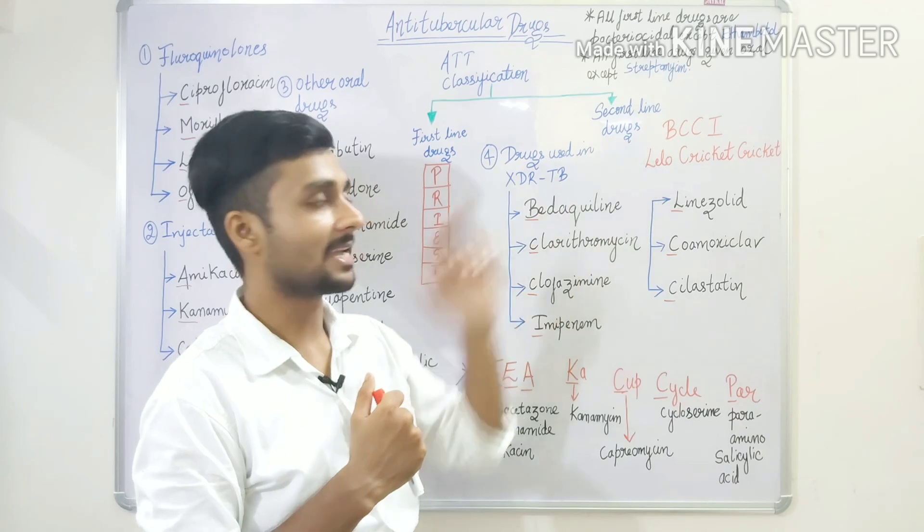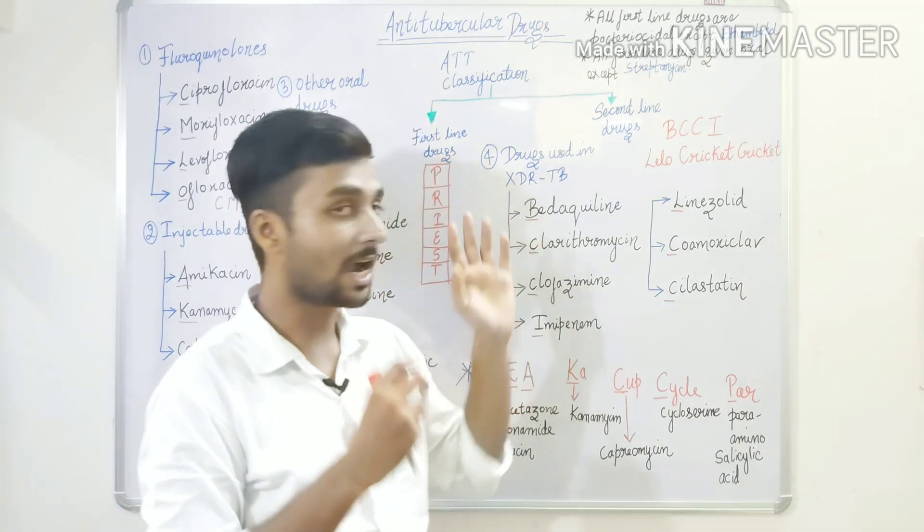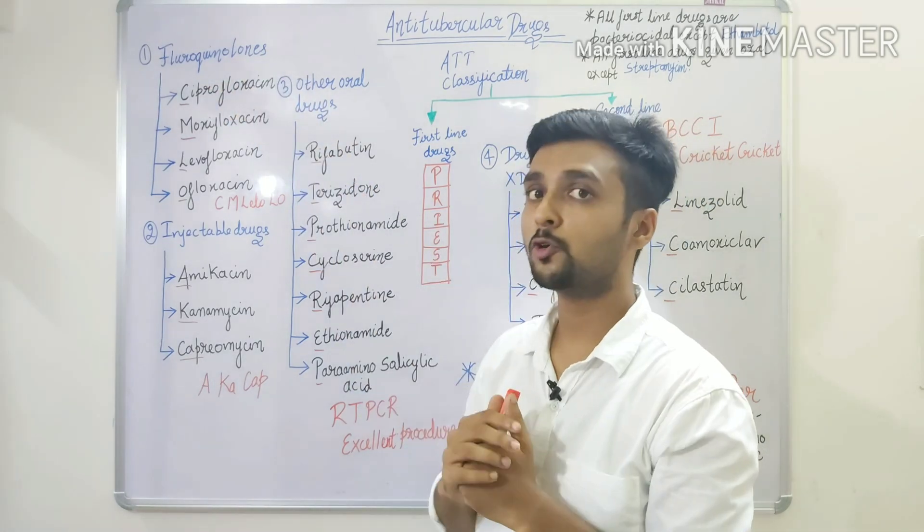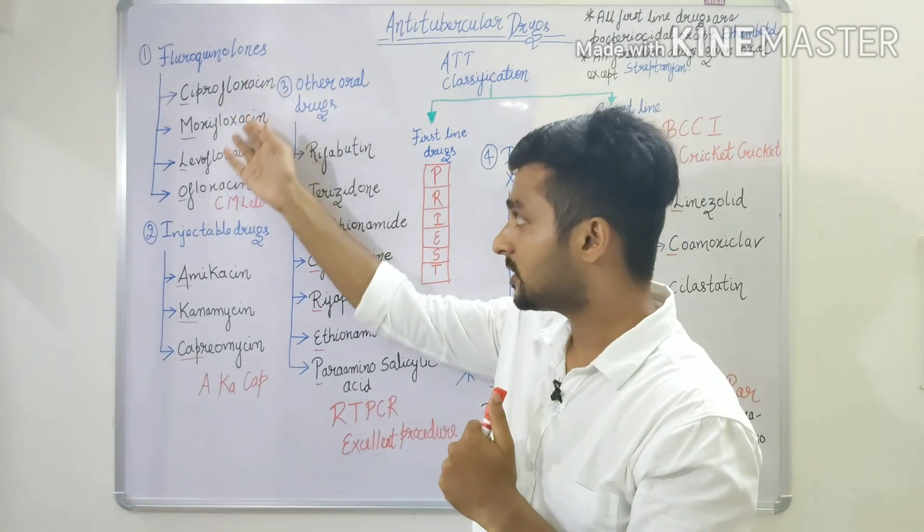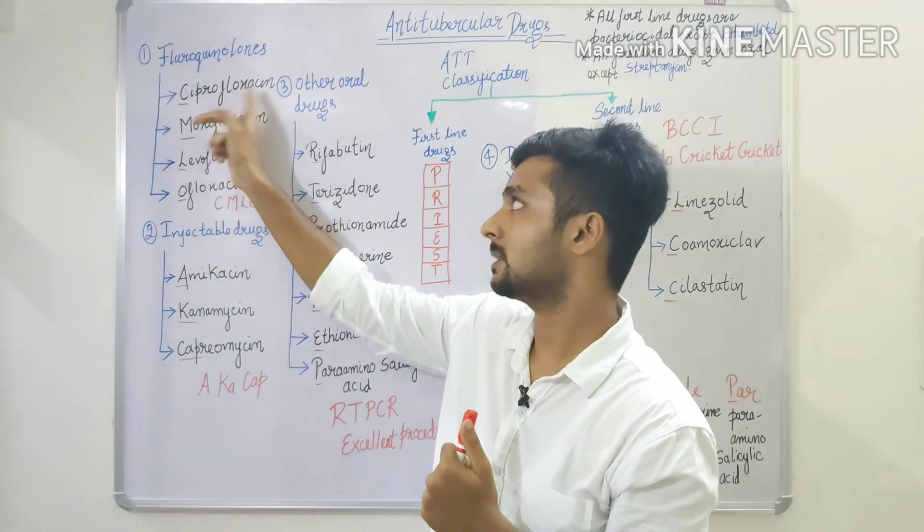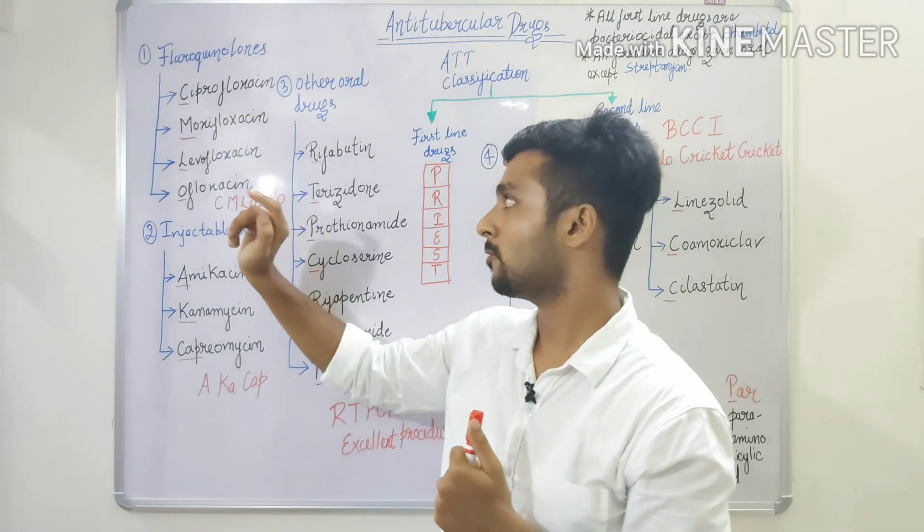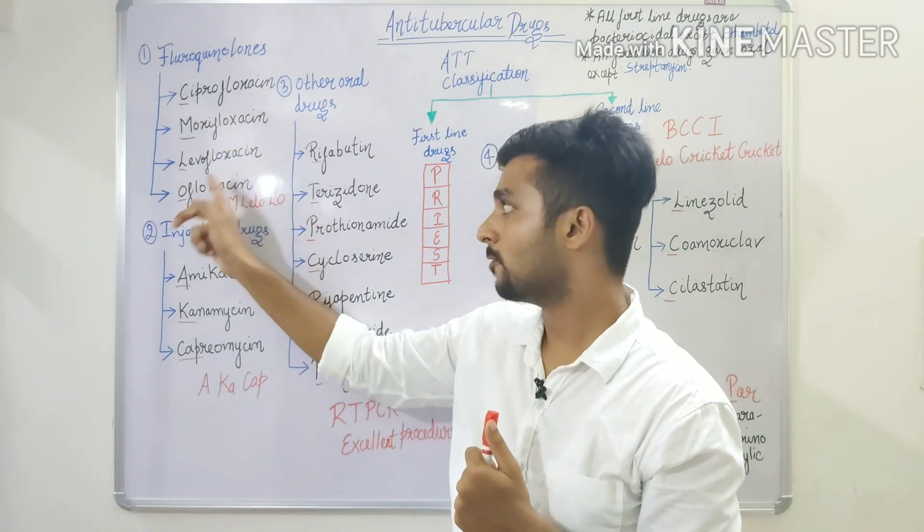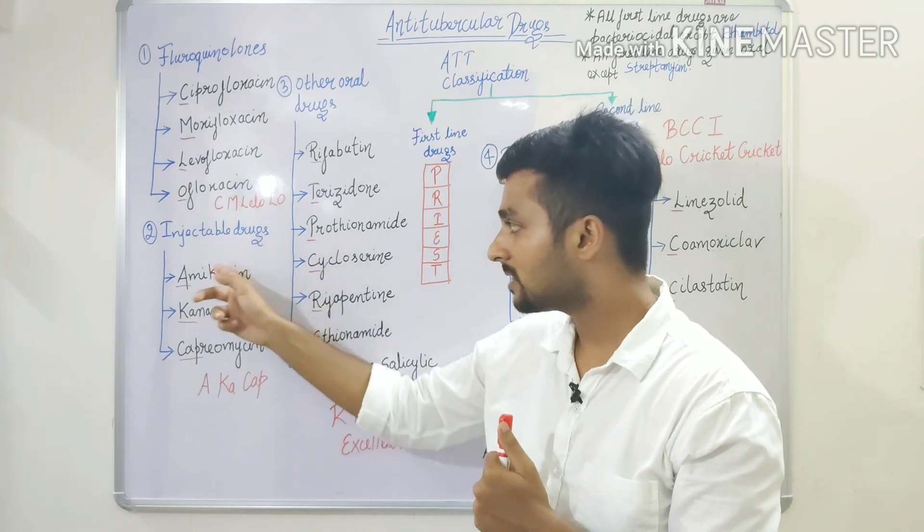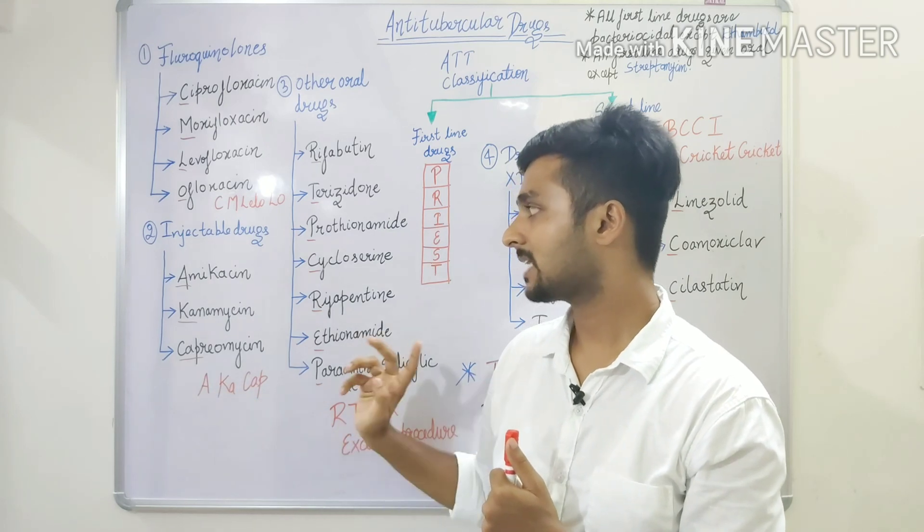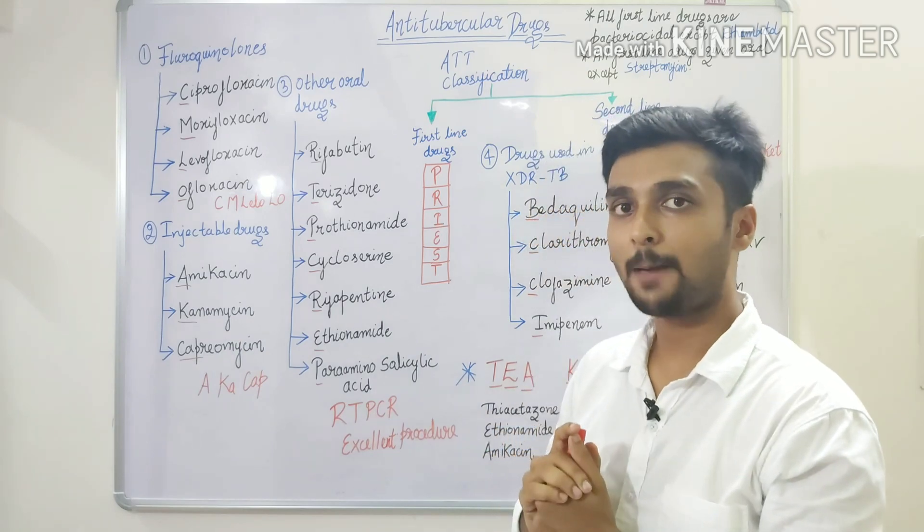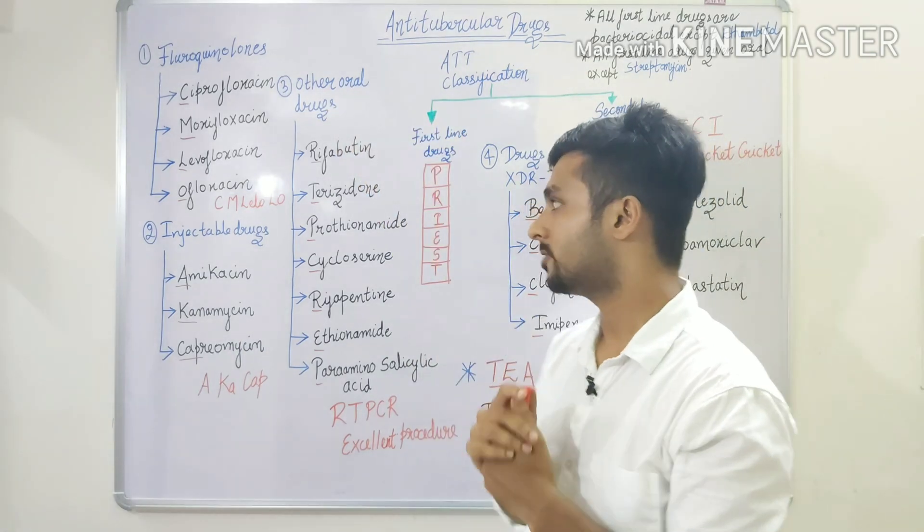Next we will talk about our second-line drugs which we have classified in 4 classes. First is fluoroquinolones, which are antibiotics. We have 4 written: MOLO. M for Moxifloxacin, L for Levofloxacin, O for Ofloxacin. Next is injectable drugs which we have 3 written. How do we remember? AKC: A for Amikacin, K for Kanamycin, and last is Capreomycin.